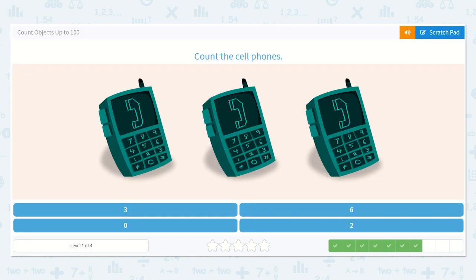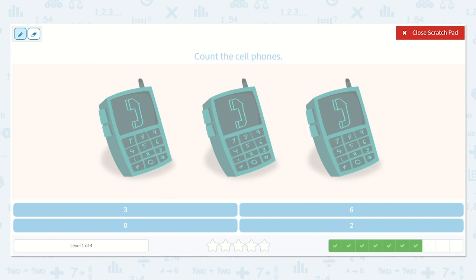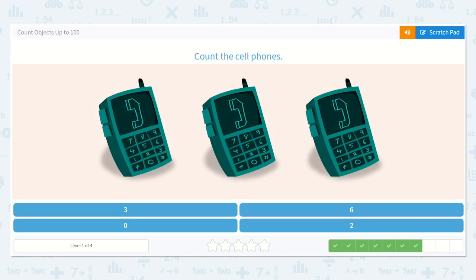Okay, time to count the cell phones. One, two, three. I found three cell phones. I know that the number three looks like this.